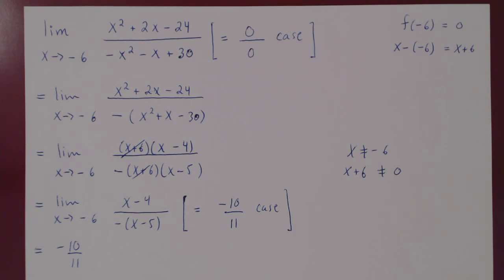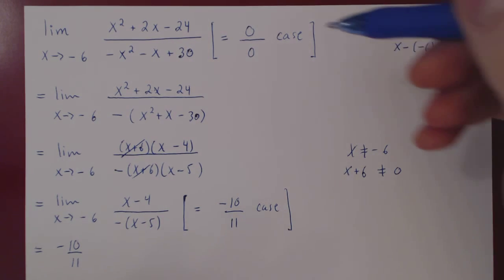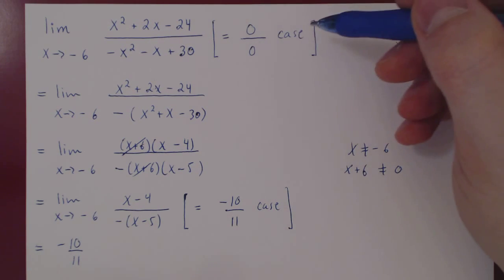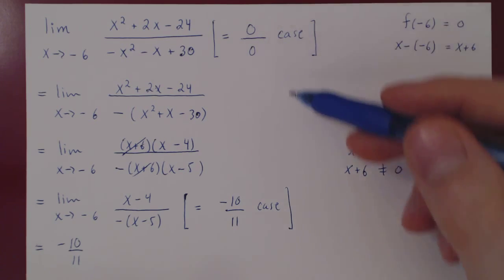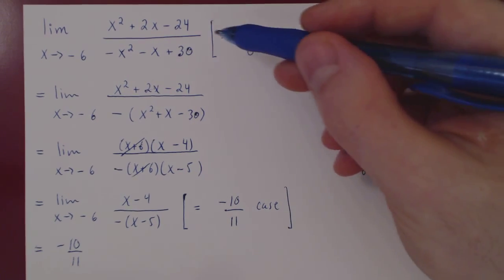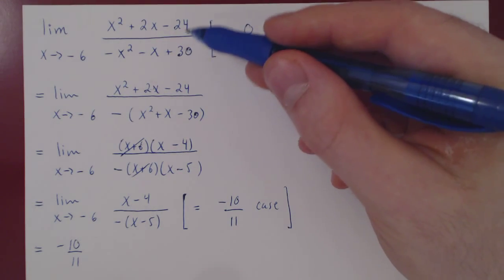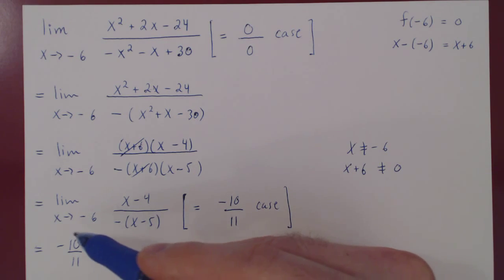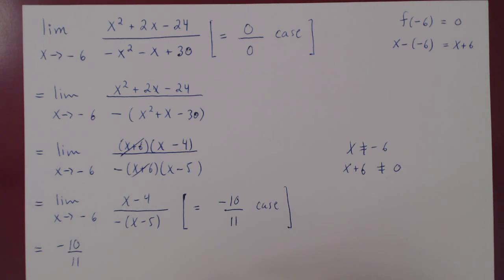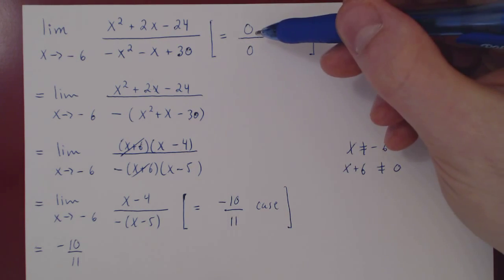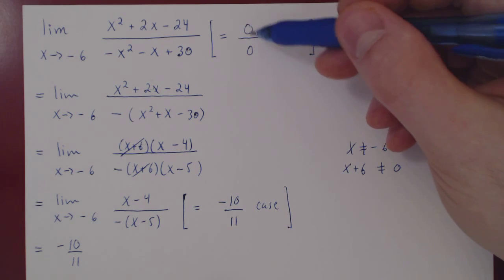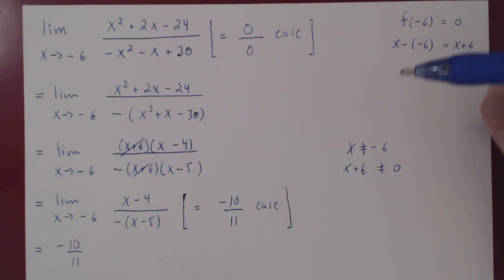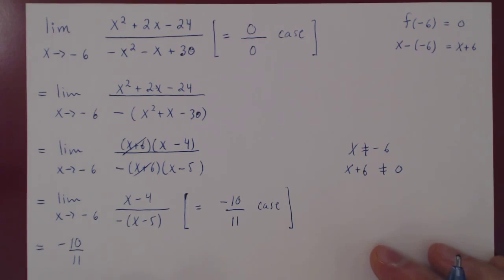The original limit gave us a 0/0 indeterminate case, yet both the numerator and denominator balanced each other out to give a final answer of -10/11. So you have to be careful when you deal with a 0 over 0 case. Let's look at one more example.